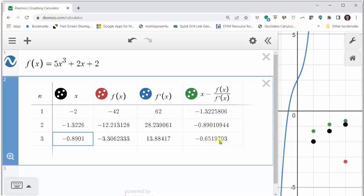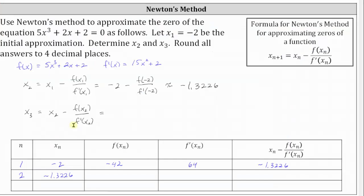Let's go back and complete our table and finalize the answers. We now know x three is approximately negative 0.8901. I hope you found this helpful.